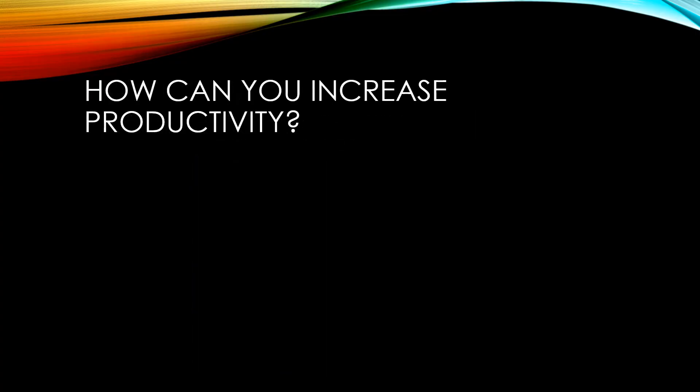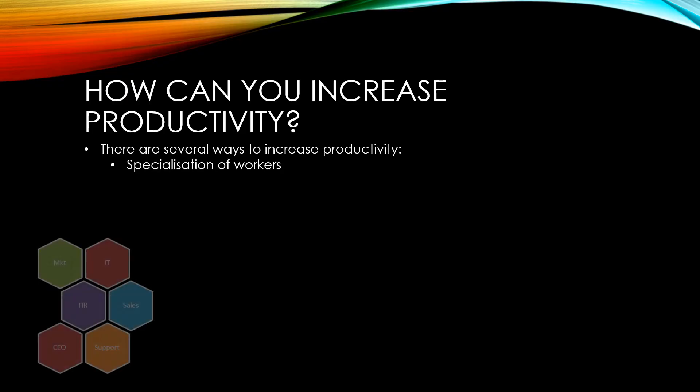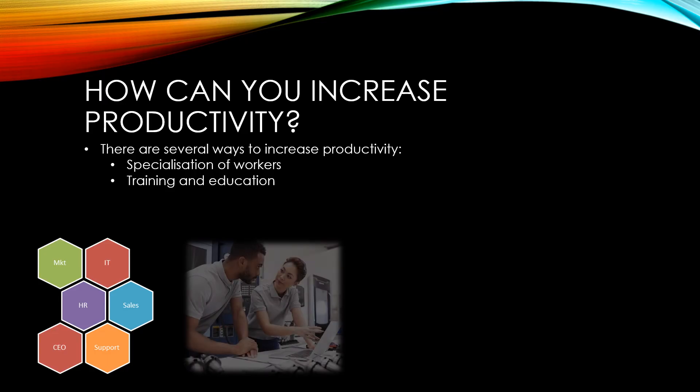There are several ways that producers can increase their productivity. One of these is the specialisation of workers. As workers perform more specialised tasks, they become better and better at performing the tasks they do repeatedly. This means that they become more efficient and are able to do more jobs in a smaller amount of time.